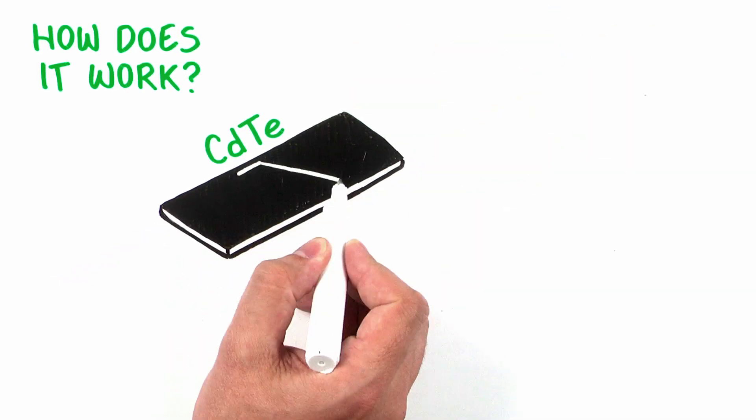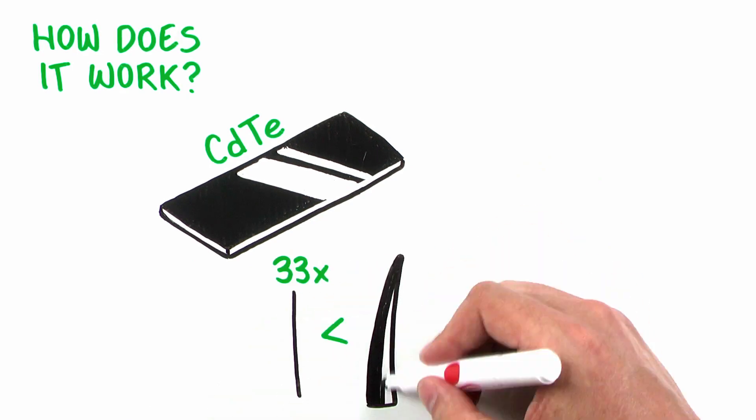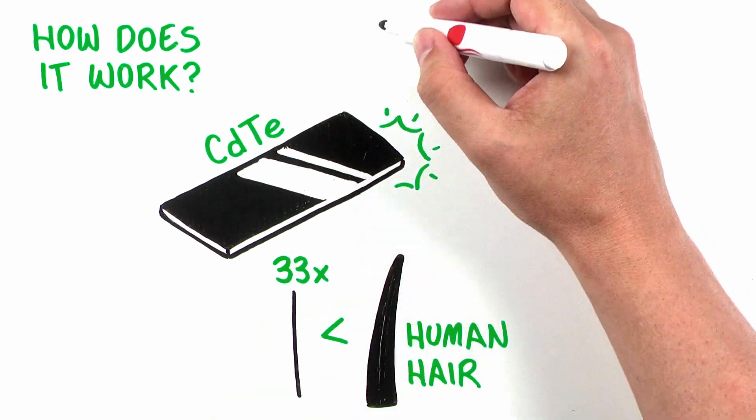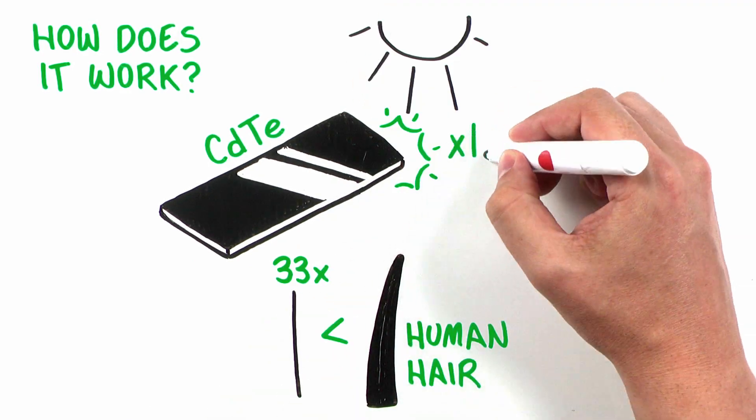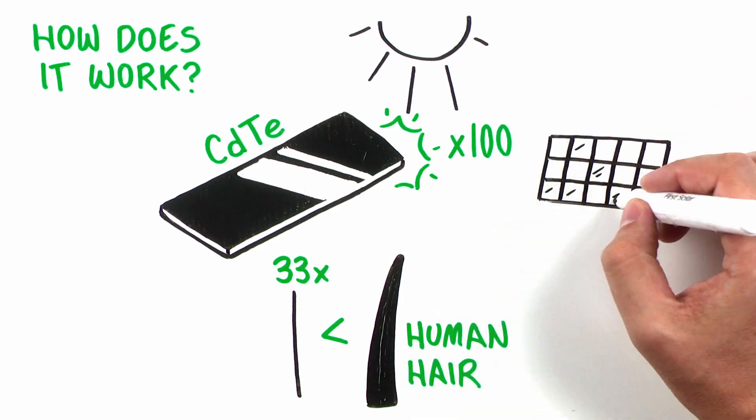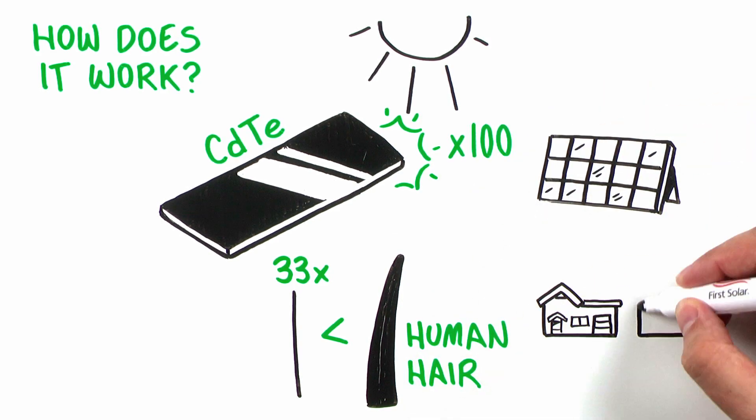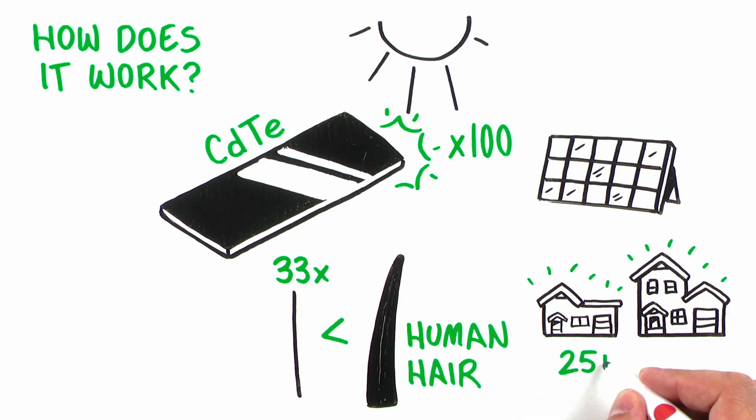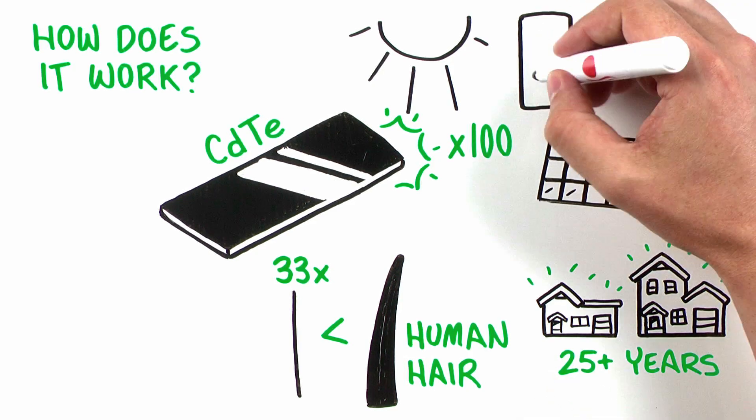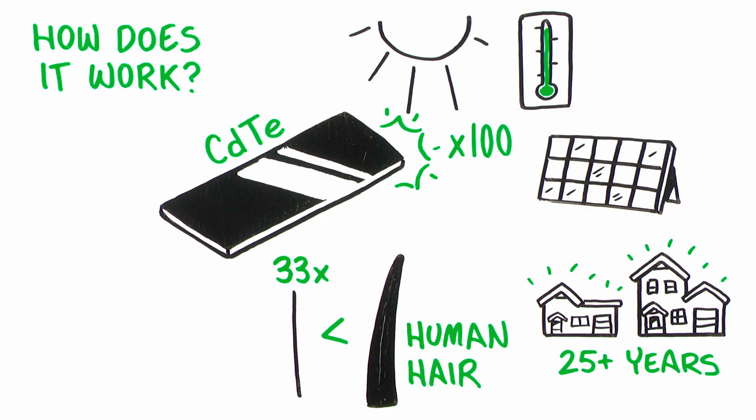The end result uses a film 33 times thinner than a human hair that absorbs sunlight with up to 100 times less semiconductor material than crystalline silicon modules and generates clean electricity for more than 25 years. They also perform substantially better in occasional shade and hot and humid climates than other products on the market.